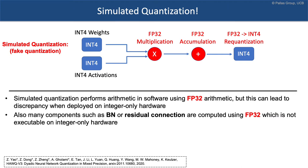Another example is a residual connection. A lot of quantization work in the literature uses floating point arithmetic to perform the addition in the residual connection. This helps accuracy, but it's not feasible to deploy on integer-only hardware to get speedup. We're doing quantization for two goals: reduce model parameters and get speedup — but we cannot achieve both this way.